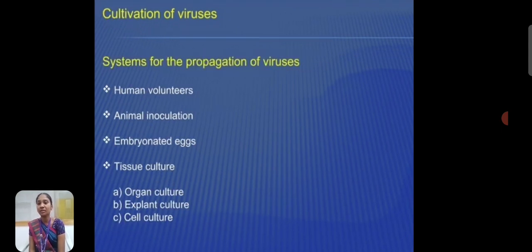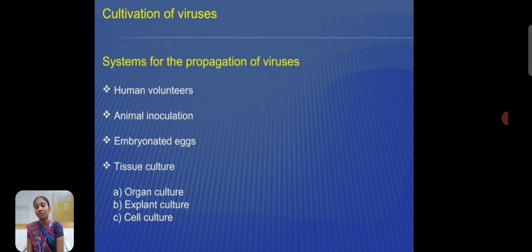The cultivation of viruses. The systems for cultivation and propagation of viruses are classified into many types: first, human volunteers; next, animal inoculation; third, embryonated egg; fourth, tissue culture. Tissue culture is again classified into three types: organ culture, explant culture, and cell culture.